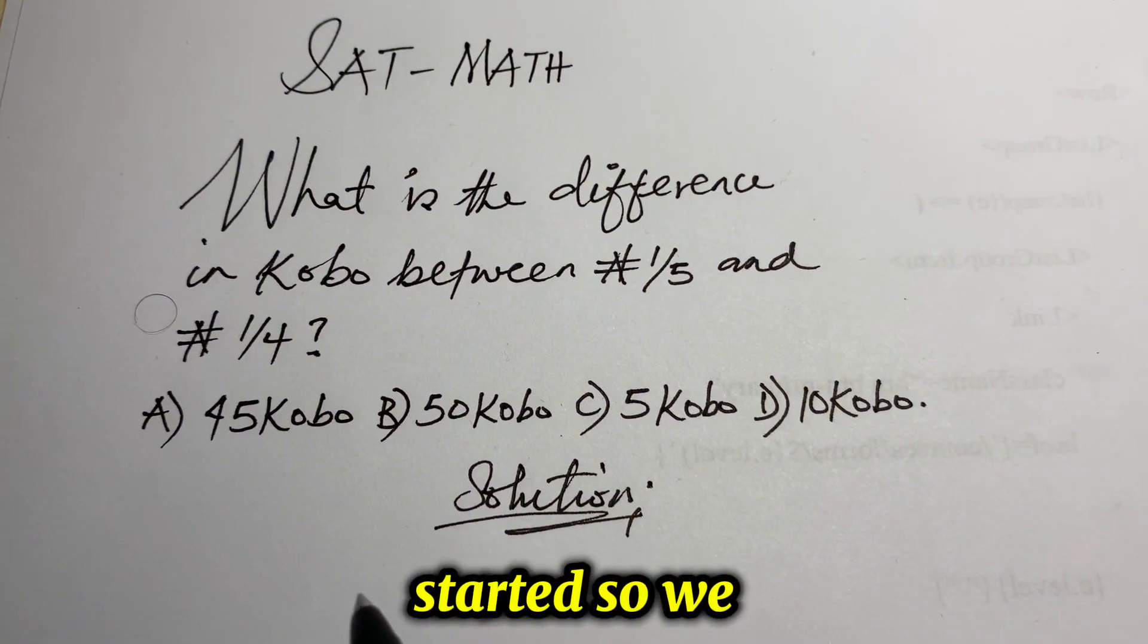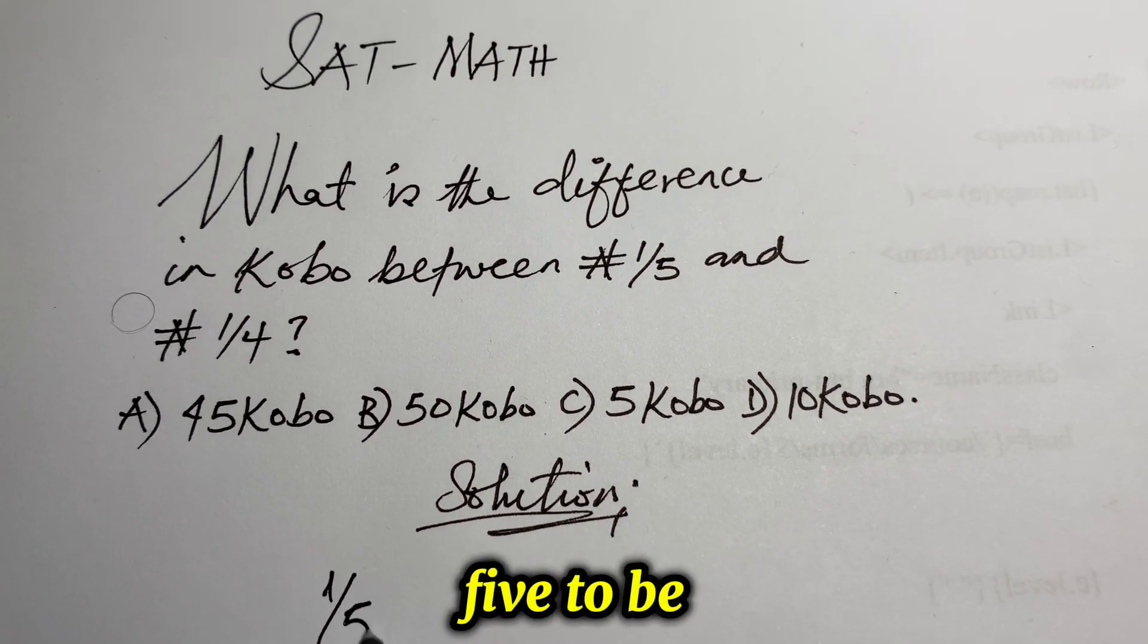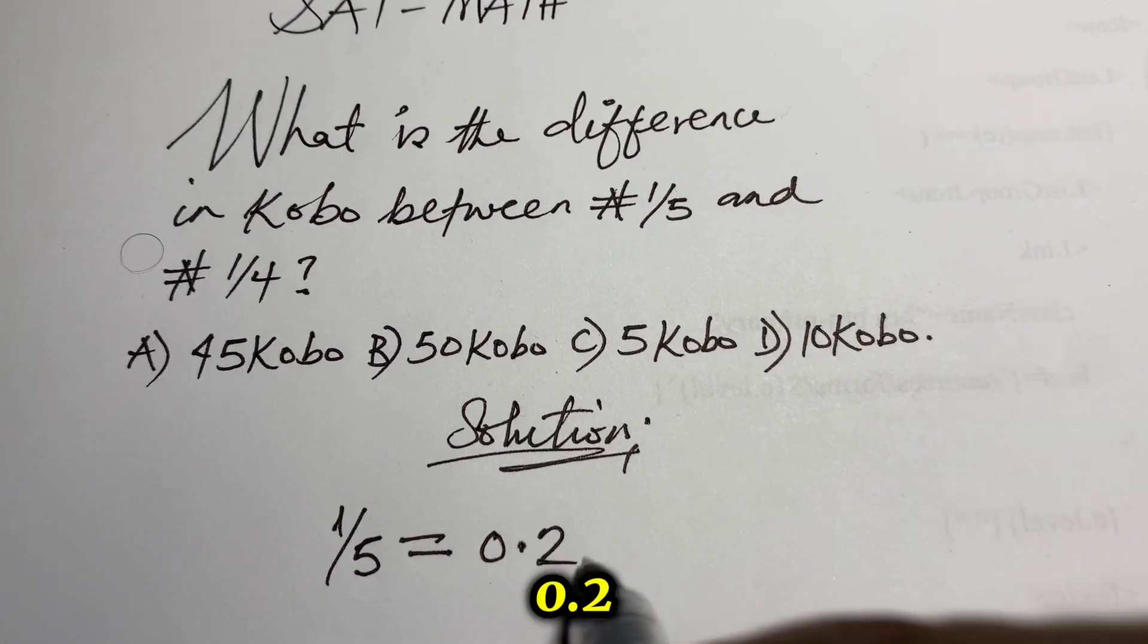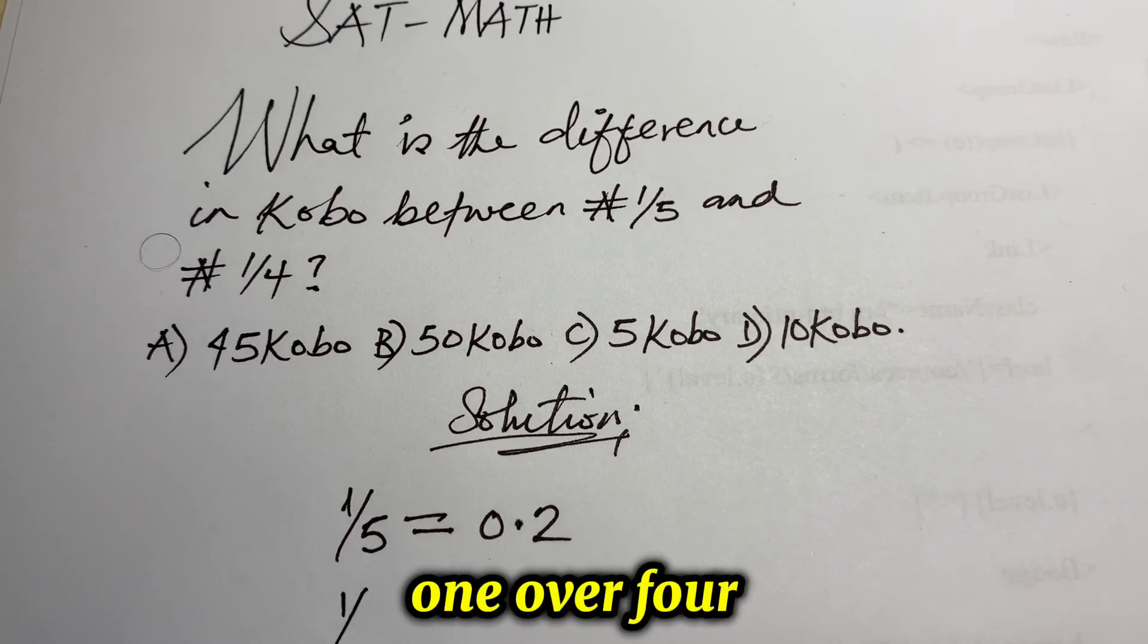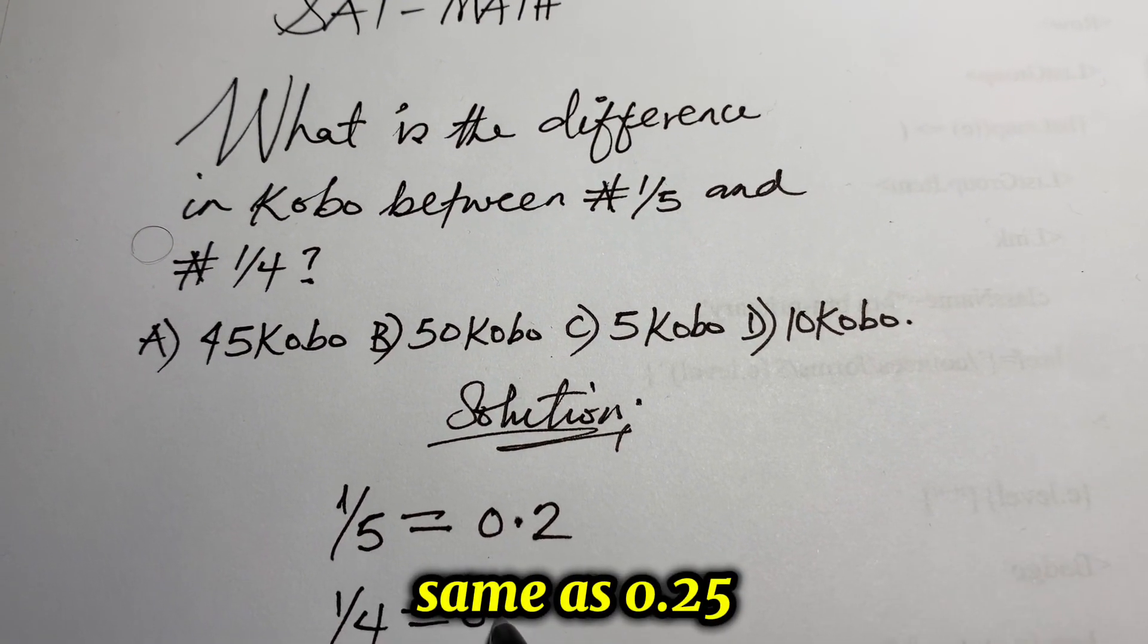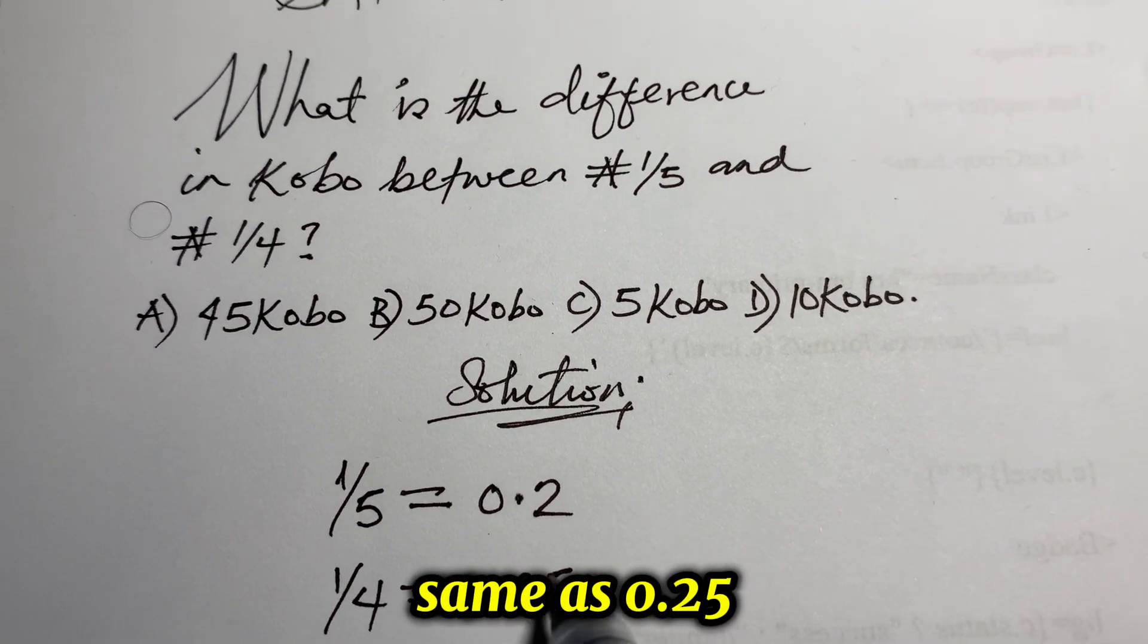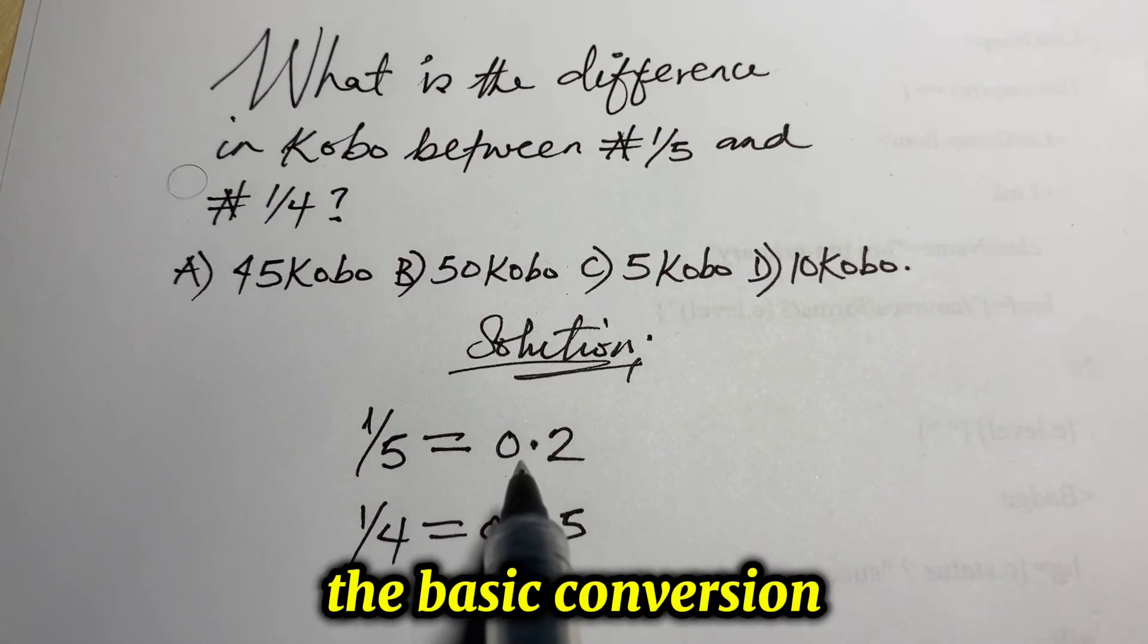So, let's get started. We have 1 over 5 to be the same as 0.2. We also have 1 over 4 to be the same as 0.25. Alright, we've done the basic conversion.